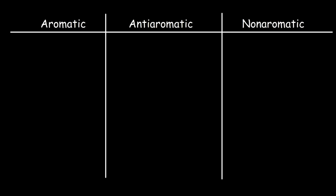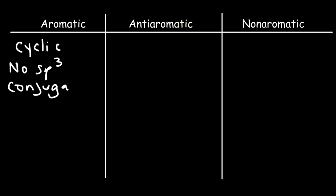Let's talk about the conditions that must be met for a molecule to be aromatic. First, that molecule has to be cyclic. Every atom in that molecule must have a p-orbital, so you can't have any sp3 carbons. You can have an sp2 or sp carbon, but not sp3. The molecule also has to be conjugated, so the pi electrons have to be free to move around in the ring, and all of the p-orbitals must be able to overlap with adjacent p-orbitals.